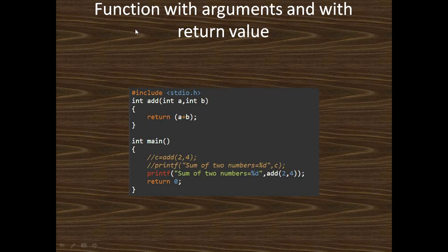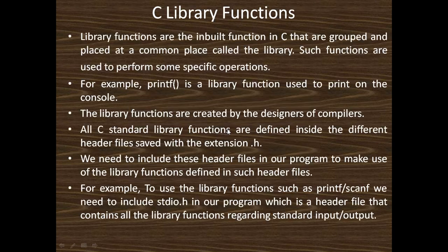The fourth type: function with arguments and with return value. This function has both a return type and parameters. When you call the function add(2, 4), it returns an integer type value. That is: return type int, function name, and parameter list. It returns the addition of two numbers.